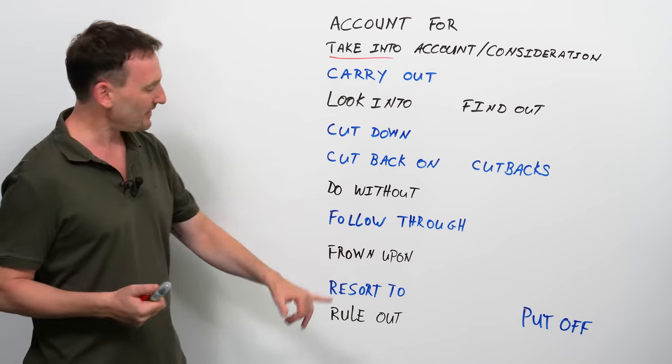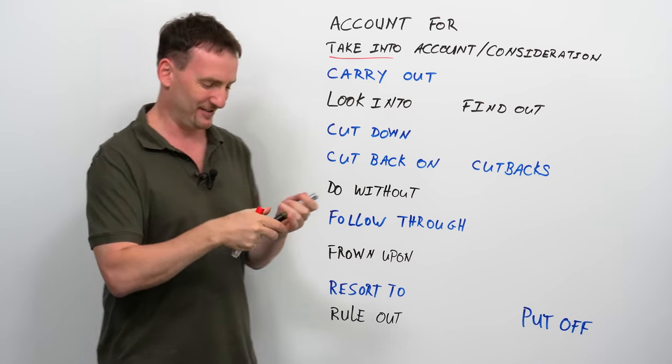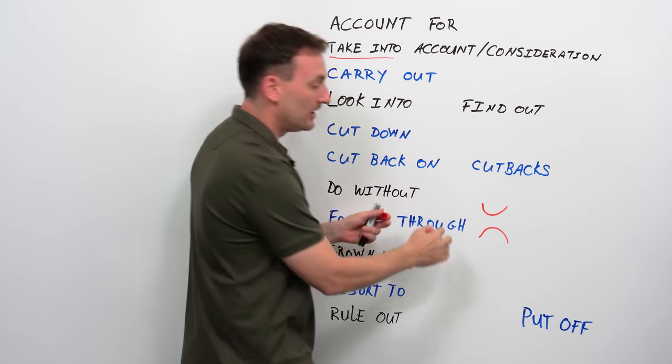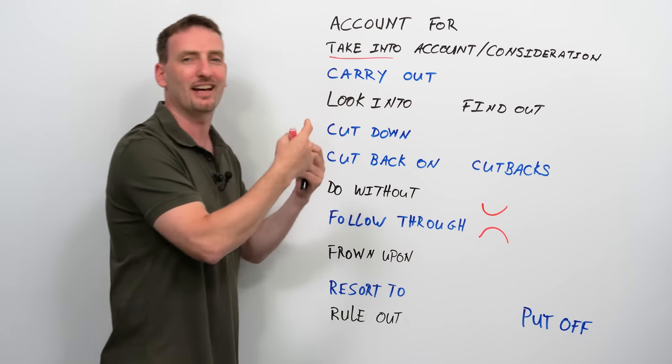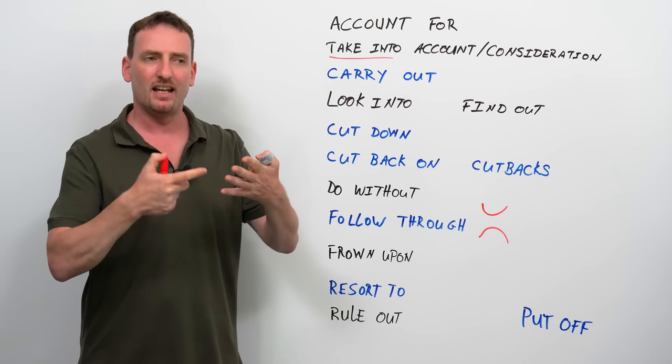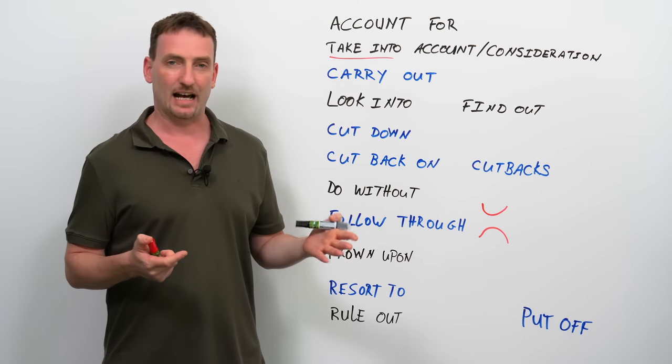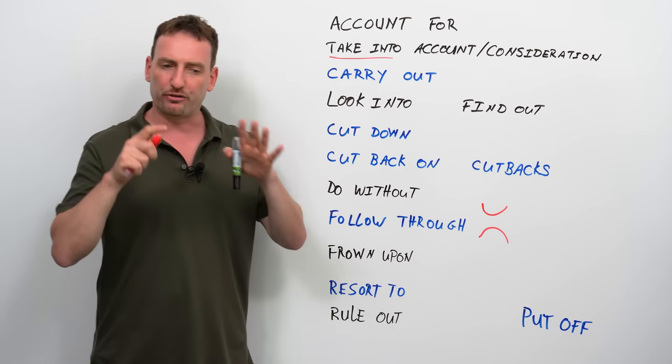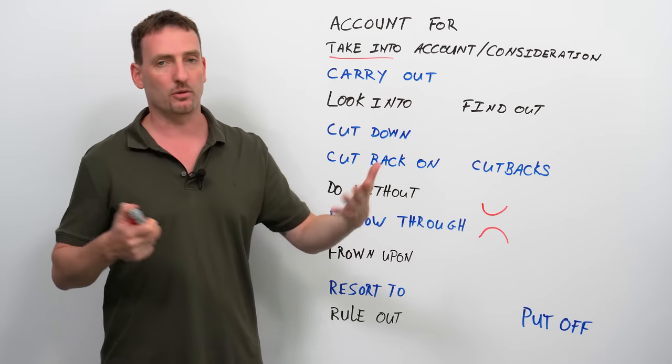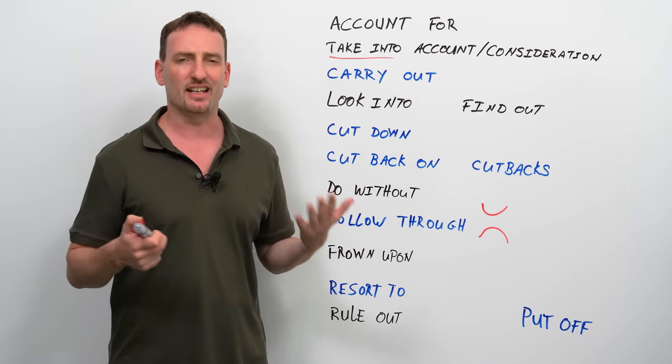Frown upon. Now, first of all, what does frown mean? So, the opposite of a smile is a frown. So, we always say this is a smile, this is a frown, right? So turn that frown upside down and you get a smile. That's just for the kids anyway. So, to frown upon means to basically not accept something or to think something is not a good thing. Now, generally speaking, when you frown upon something means that technically it's okay or it's legal or whatever, but it's frowned upon, means people don't want you to do it. It's not really accepted.